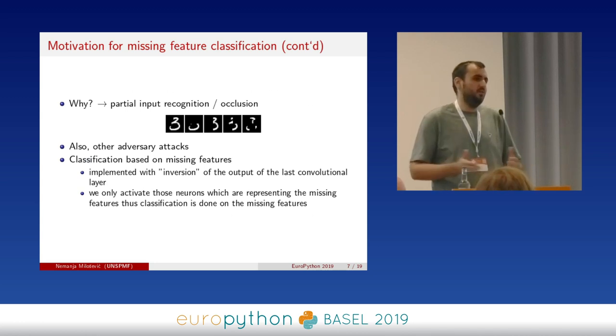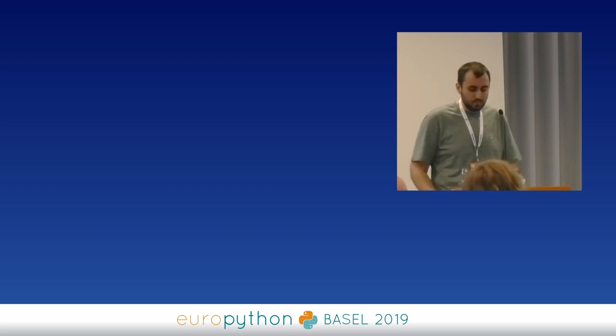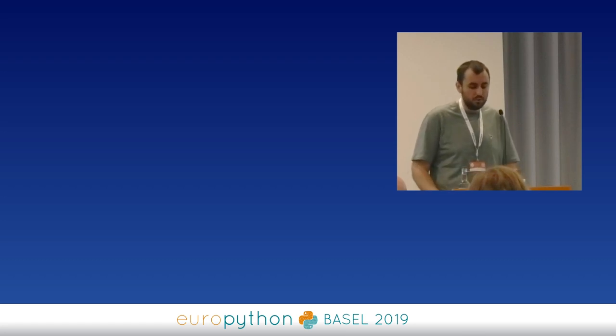Why would you do this? If you already know the features of the image five, why go the other way around? The main reason, going back to adversarial learning and occlusion, is: what happens if we have partial inputs? For example, a digit in our example is damaged somehow, or half of the pixels are missing, or one part of the image is corrupted or blurry. The classifier that works with missing features works much better on these damaged images than the classic neural network classifier.